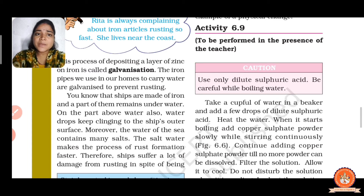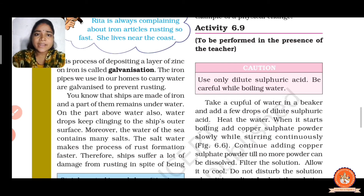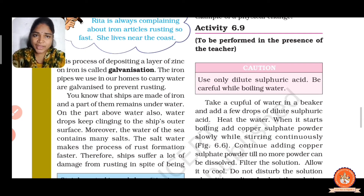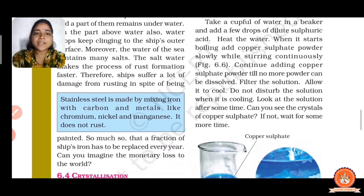Sieves are made of iron and part of them remains underwater — the bottom of the sieve is also made of iron. Water drops keep cleaning the sieve's outer surface. Moreover, sea water contains many salts, and salt water makes the process of rust formation faster. Therefore, sieves suffer a lot of damage from rusting in spite of being painted.